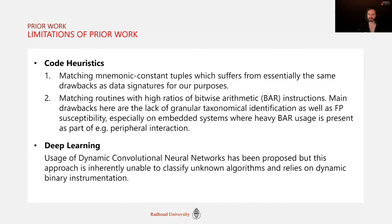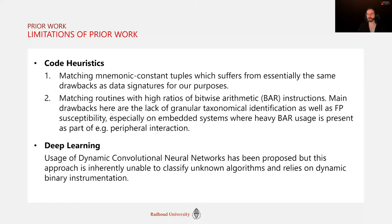There's also prior work using code heuristics. One flavor matches mnemonic-constant tuple signatures and thus suffers from the same drawbacks as data signatures. The other flavor determines the ratio of bitwise arithmetic instructions on a per-function or per-basic-block basis as a crypto indicator. The main drawbacks here are susceptibility to false positives — for example through the setting of flags or use of shift registers for other purposes — and a lack of any granular identification, so you might know something could be crypto but have no further indications and still face a lot of manual analysis.